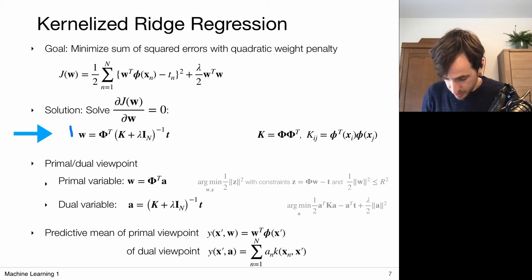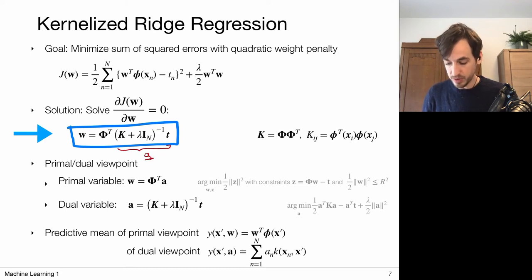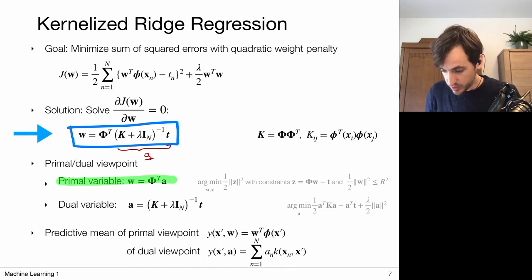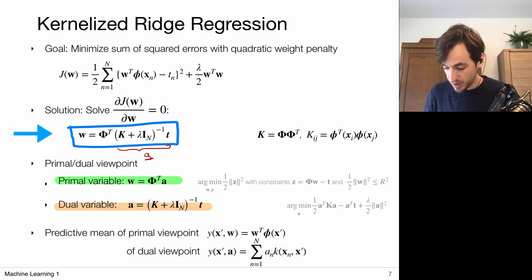You could also approach this from an optimization point of view: my main objective is to minimize a particular functional, which I can formulate as a constrained optimization problem introducing a parameter z. When talking about constrained optimization problems, you can talk about a dual problem — and when you solve this dual problem, you have actually solved your original problem. It turns out this is the corresponding dual Lagrangian or dual objective to minimize, and its minimizer leads to this particular dual variable.